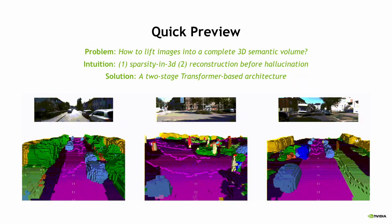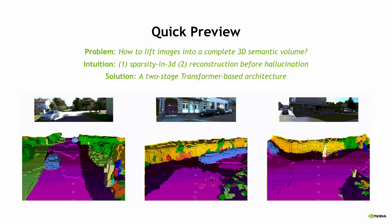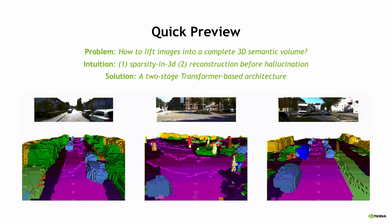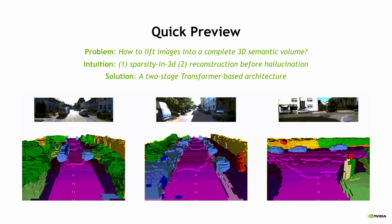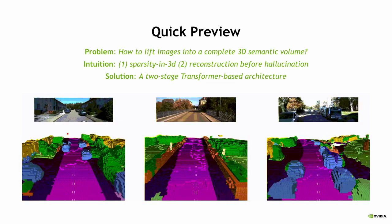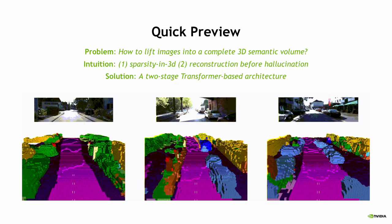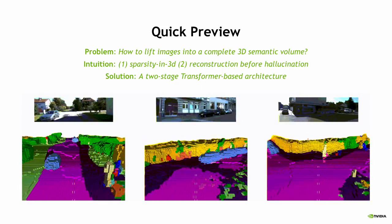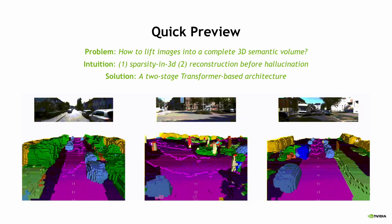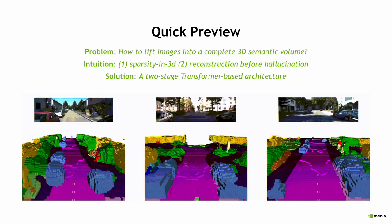Let's do a quick overview of our paper. Our target problem is how to lift RGB images into a complete 3D semantic volume. To solve this problem, our basic intuitions lie in two folds. The first one is how to leverage sparsity in 3D, since there are a lot of empty spaces in 3D space. The second one is that reconstruction before hallucination will provide better featurizations to learn complete 3D representations. To leverage these two intuitions, we design a novel two-stage transformer-based architecture to achieve both efficient and effective 3D semantic scene completion.